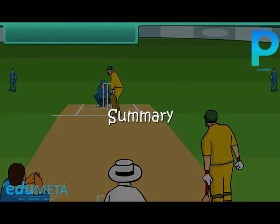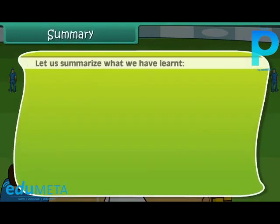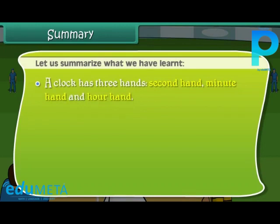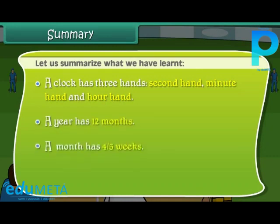Summary. Let us summarize what we have learned. A clock has 3 hands: second hand, minute hand and hour hand. A year has 12 months. A month has 4 or 5 weeks. There are 7 days in a week.